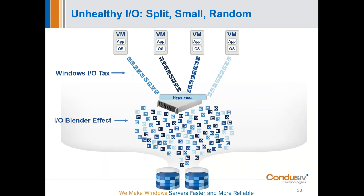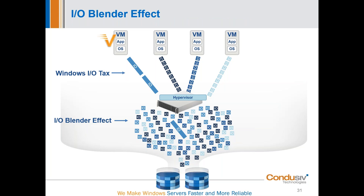Now that you know what we can do and the benefits we provide — how do we do it? This is a rudimentary extraction of a virtual environment. Virtualization has been incredible for cost savings and efficiencies, but there is a really big downside: it adds a lot of complexity to the data path. This is where two severe inefficiencies come in. One is the Windows IO tax — Windows breaking files down into much smaller pieces than they need to be, generating small split randomized data patterns. The second is what we coined with Gartner — the IO Blender effect — the randomization of data in the shared environment.